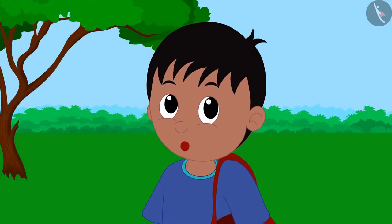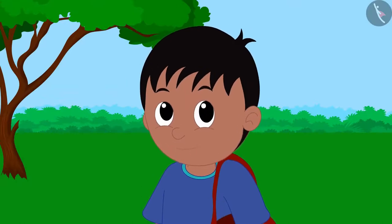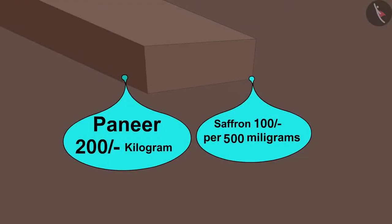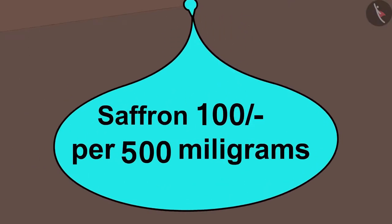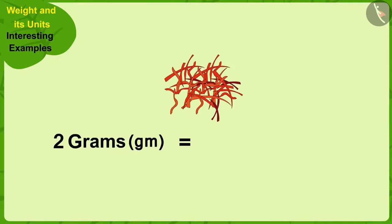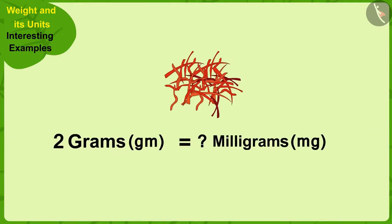Okay, I have to buy 1 kilogram and 450 grams of paneer. Now, the cost of saffron is written in milligrams here. So, how many milligrams will be equal to 2 grams of saffron?